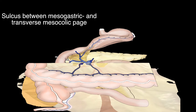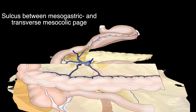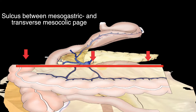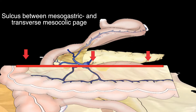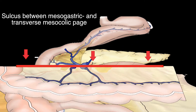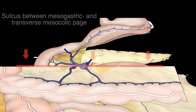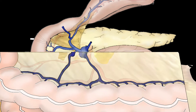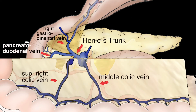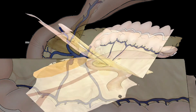During the operation, a sulcus is prepared between the mesogastric and the transverse mesocolic page. During this preparatory step, the trunk of Henle will be identified at the bottom of this sulcus. In this area, all merging veins have to be identified.